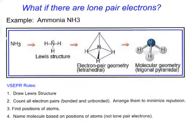What if there are lone pair electrons? Let's do an example with lone pair electrons. The example we're going to look at is ammonia. And here, if we have an ammonia molecule, we're going to first, remember, draw the Lewis structure. Here's our Lewis structure. Second, count all the electron pairs, bonded and unbonded, and arrange them to minimize repulsion. So we have one, two, three bonded pair.